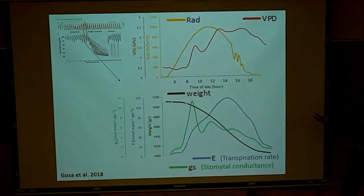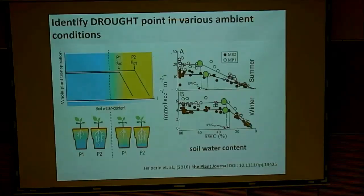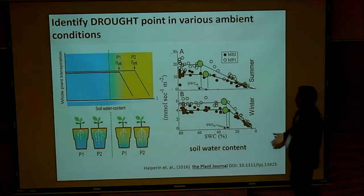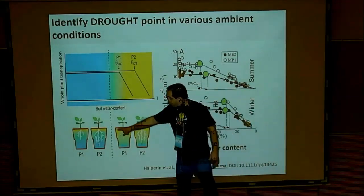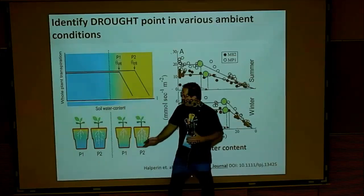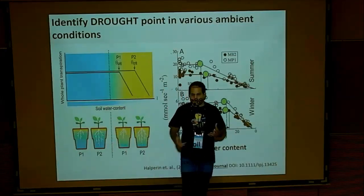At that stomatal conductance peak, water use efficiency is enormously good, but it goes down very rapidly. We believe that by increasing this peak we can improve the plant's water use efficiency and production without damaging too much water consumption. This is something you can only see when you work with a very accurate and high-throughput system. We want to focus on roots, so I'm going to give you two root traits that we are measuring.